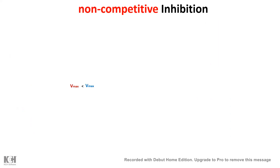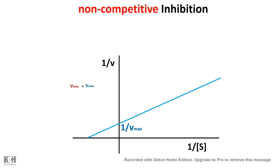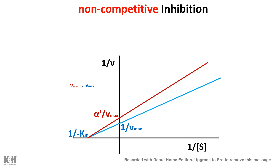In the Lineweaver-Burk plot for non-competitive inhibition, the y-intercept changes: the 1/Vmax intercept becomes α/Vmax, so Vmax is reduced by a factor of alpha. However, the x-intercept (–1/Km) remains the same, because Km is unaltered. From these two plots we can clearly see how Km and Vmax change under non-competitive inhibition.